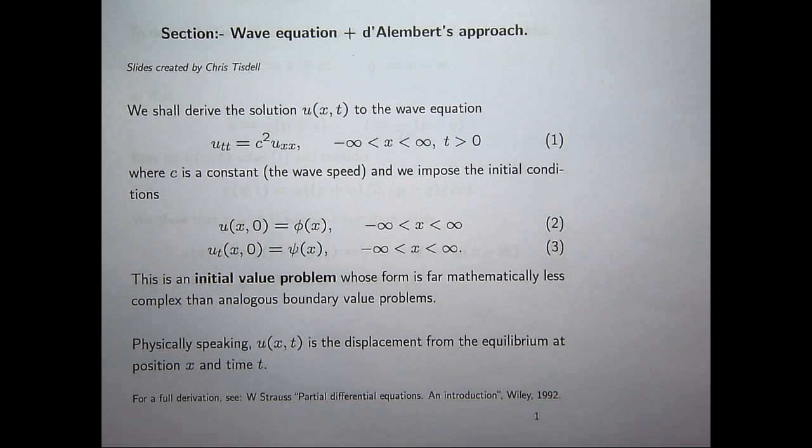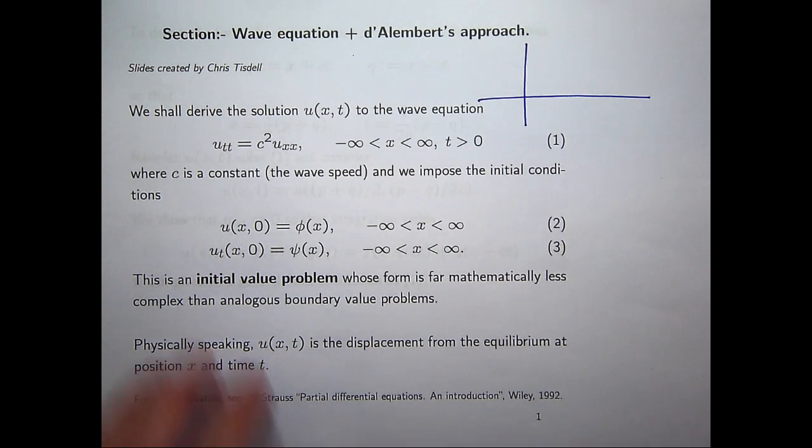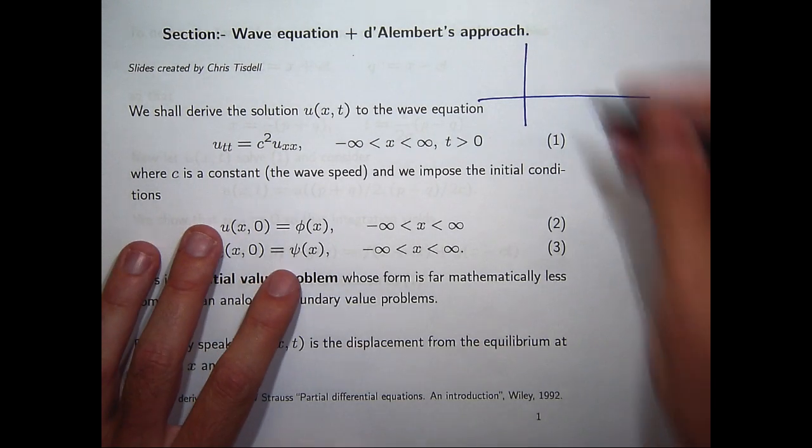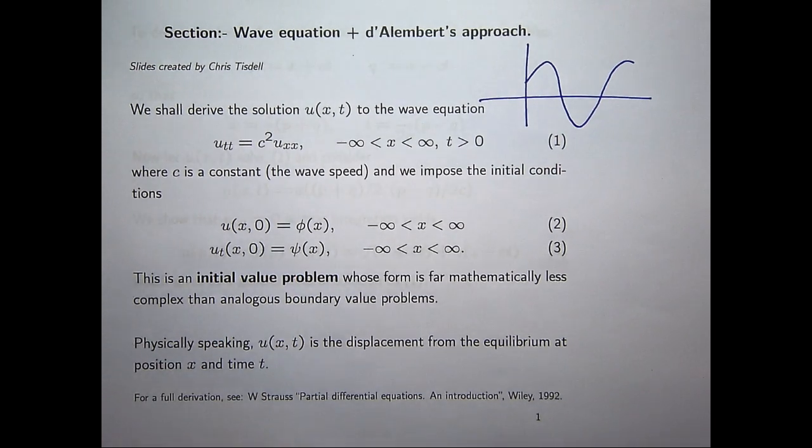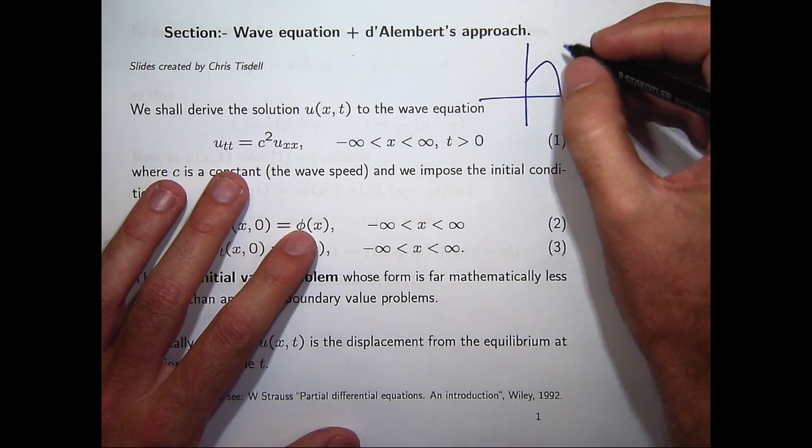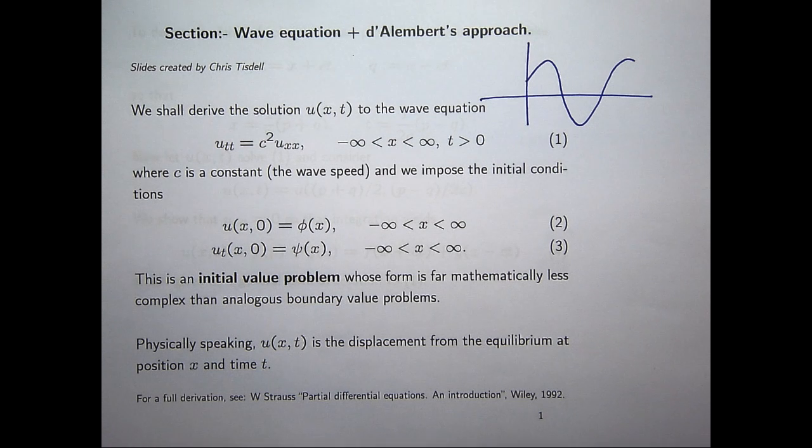So if I had to draw a little picture, suppose I've got a string that's infinitely long. And that string is vibrating. So if the horizontal axis is the string's equilibrium position, then u at position x at time t is the position or displacement above or below that equilibrium position.